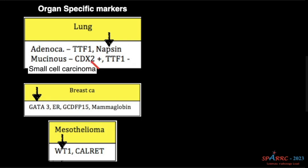For squamous cell carcinoma, P40 will be positive. For small cell carcinoma, we have a new marker now: POU2F3. Remember POU2F3 — that will be positive in small cell carcinoma.